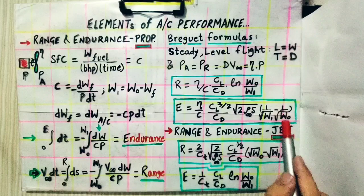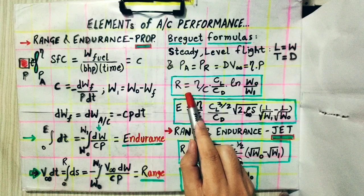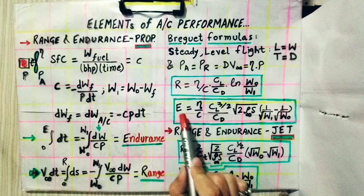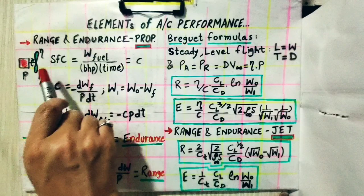Comparing these formulas, range does not depend on air density, whereas endurance depends on density. Therefore, a propeller-driven aircraft with a reciprocating engine achieves maximum endurance when flying at sea level, where density is highest. Range is independent of altitude for the propeller-driven piston-engine airplane.